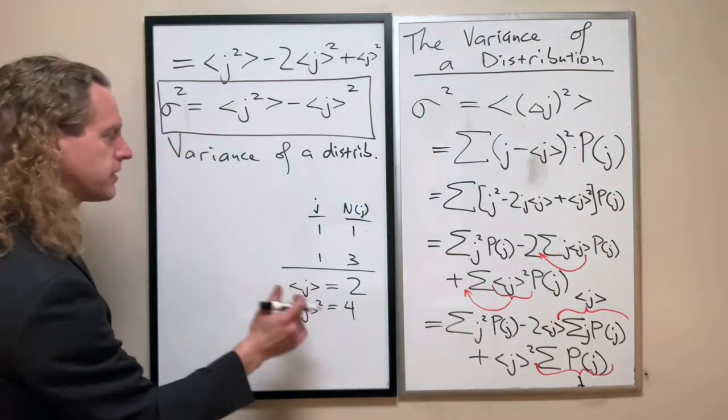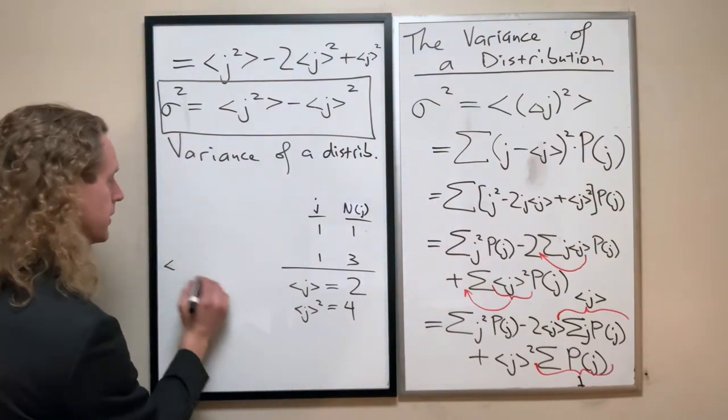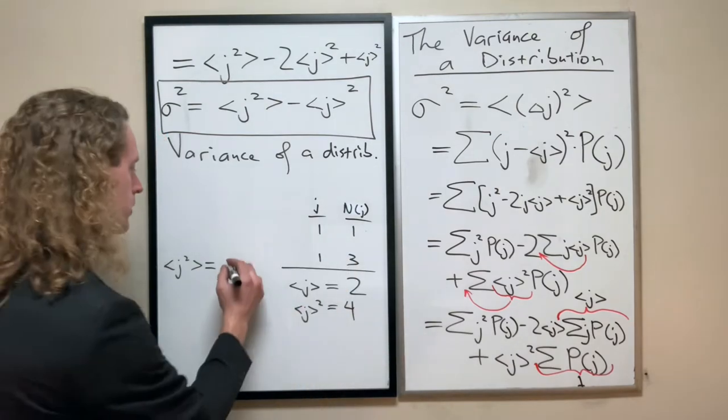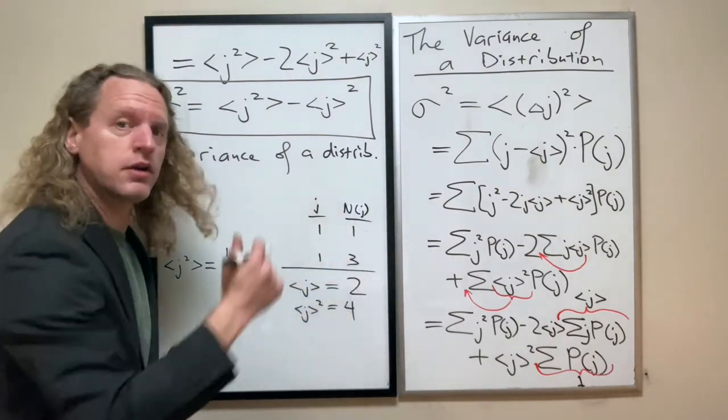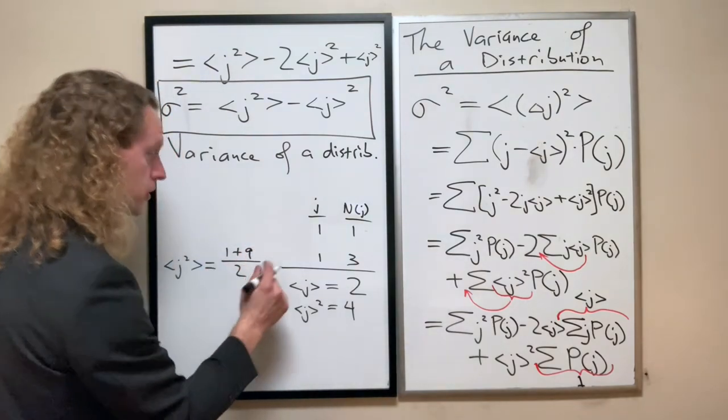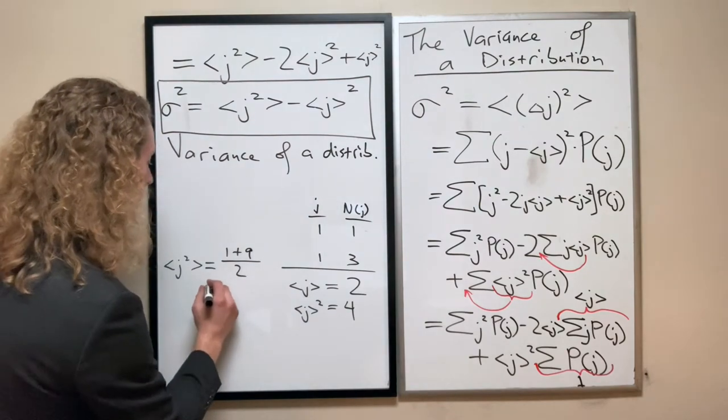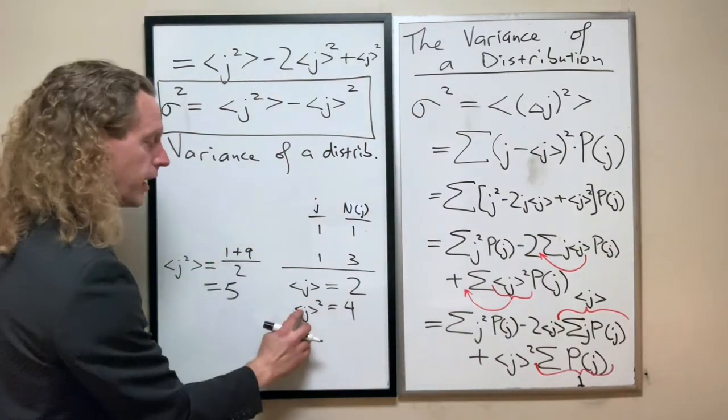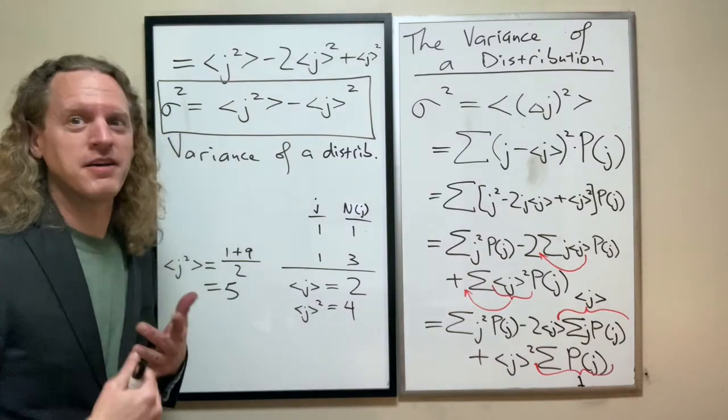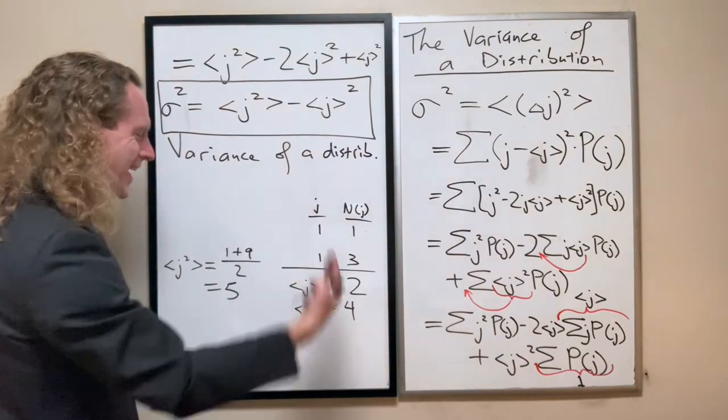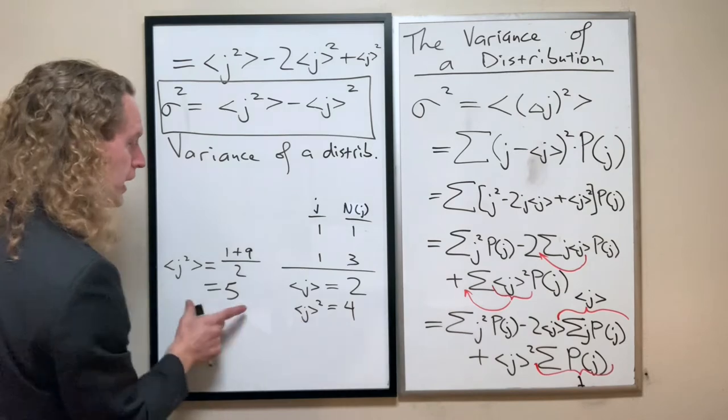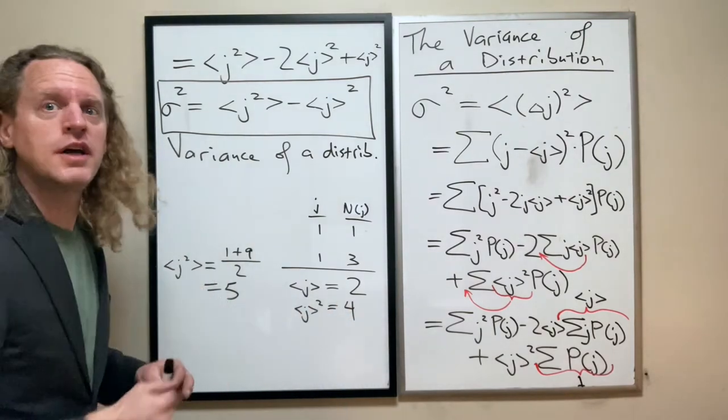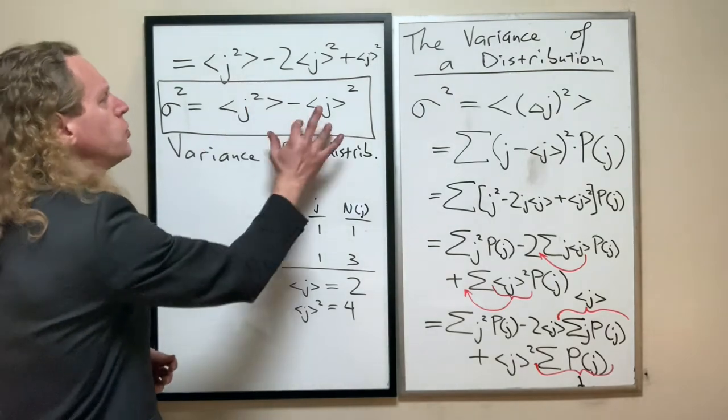So the expected value of j here is just 1 times 1 plus 1 times 3 divided by 2, or you already know the average of 1 and 3 is 2. So clearly, that thing squared is 4. On the other hand, the expected value of j squared is going to be found by taking 1 squared, or 1, plus 3 squared, or 9, divided by the total number 2. So here we have a case where the expected value of j squared is 5, whereas the expected value of j squared is 4. And as a general rule, unless we have an extremely exceptional function, those two will almost never be the same.